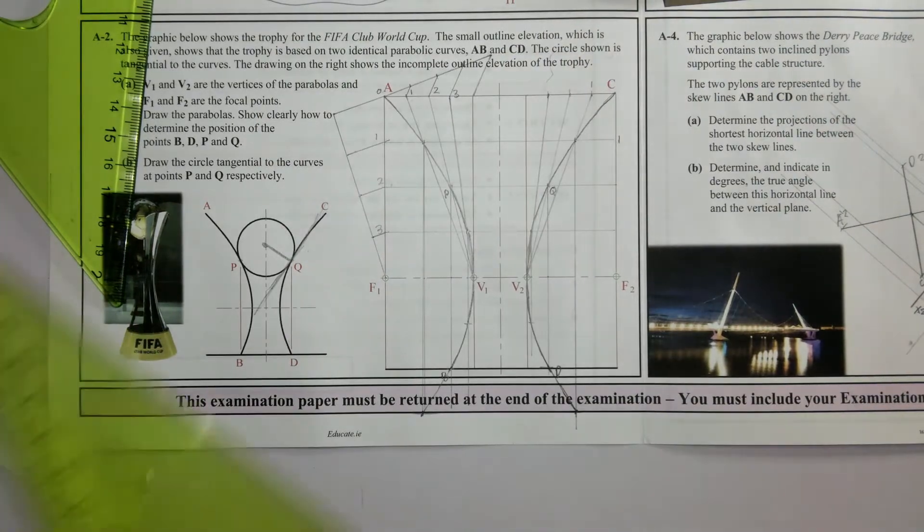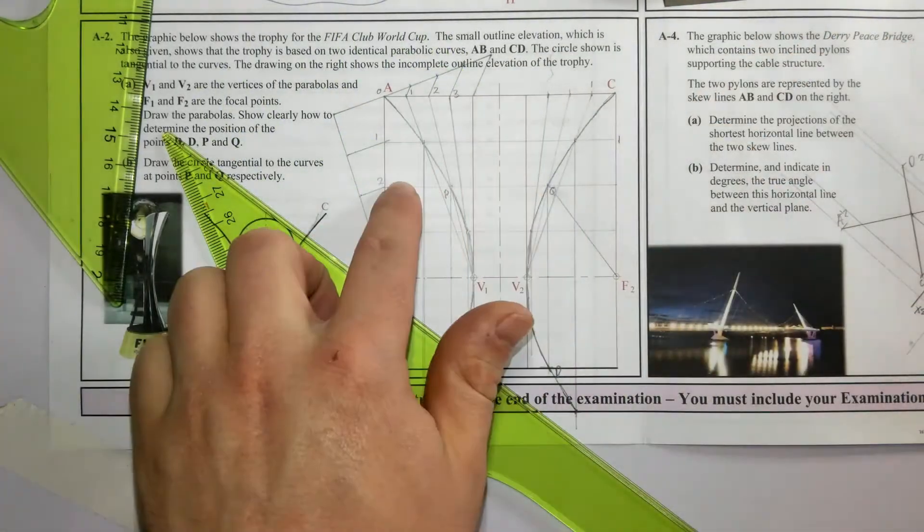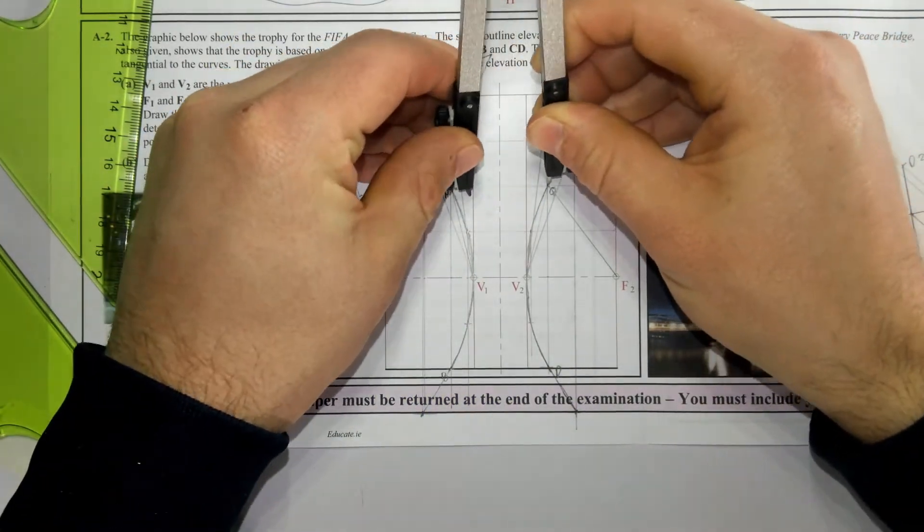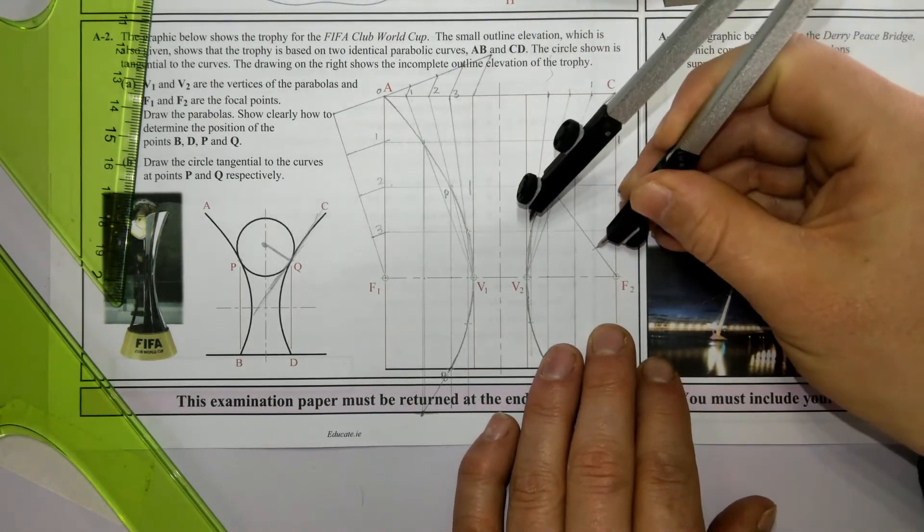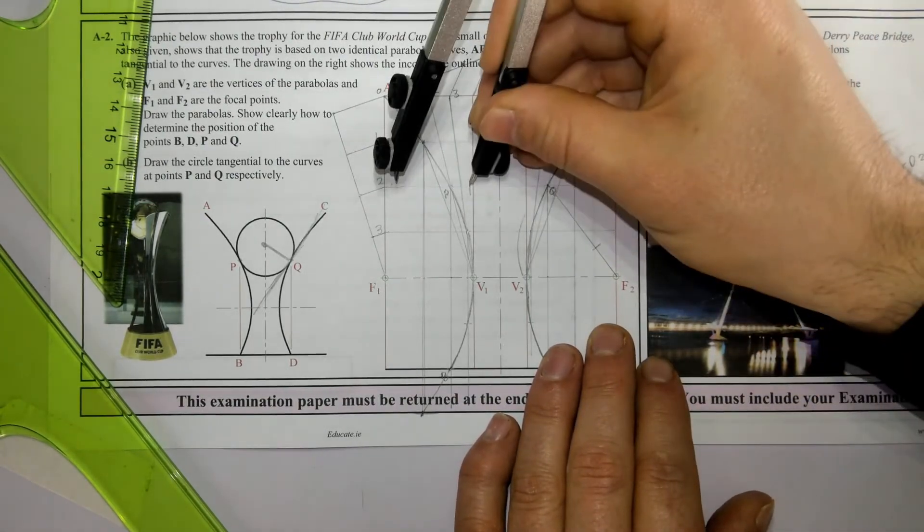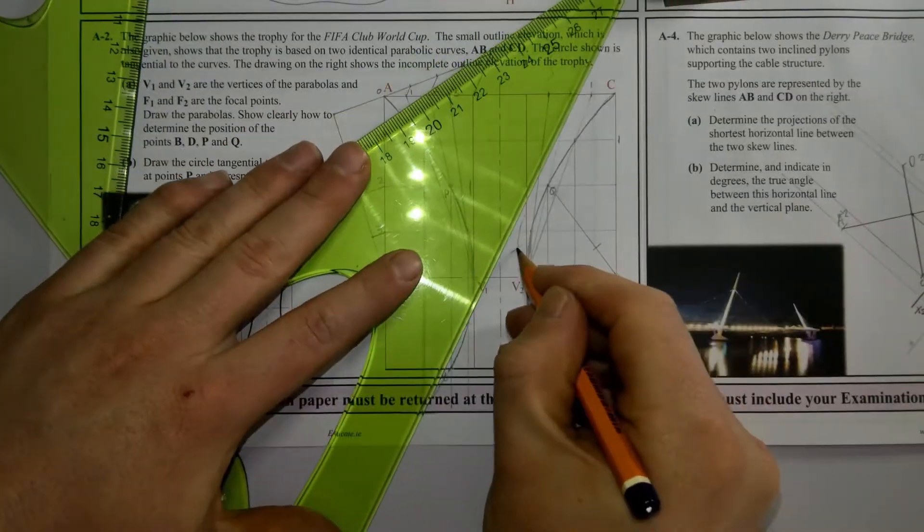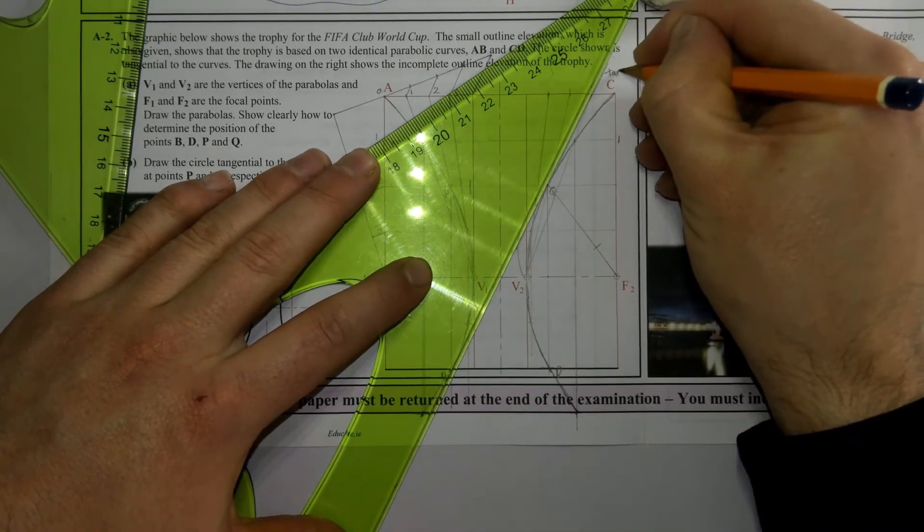So to draw the tangent I'm going to join F2 to Q and draw a horizontal line across, which is already there. I'm going to take my compass then and bisect that angle.